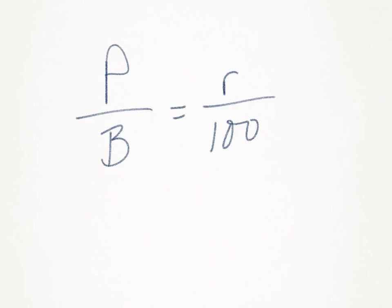Now that you know what the variables stand for, this is how you set up your proportion. You have the percentage over the base, which is equal to rate over 100.